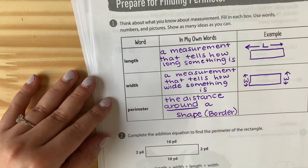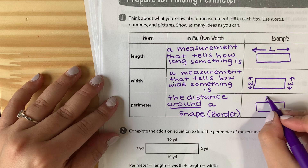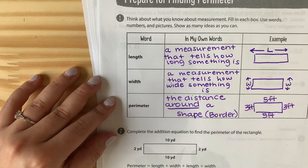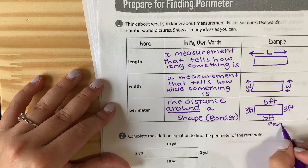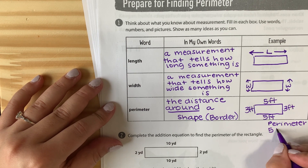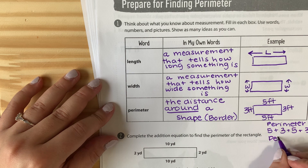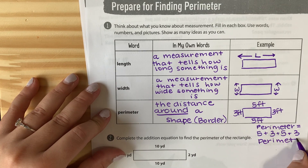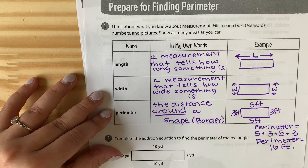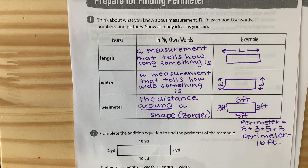An example of perimeter: we draw a rectangle that is 5 feet by 3 feet — 5 feet on top and bottom, 3 feet on each side. Perimeter equals 5 + 3 + 5 + 3, so the perimeter equals 16 feet. That is the end of our video today. If you have any questions, feel free to join the meet and ask. It is your job to now complete page 332, and show me either on Google Meet or on Seesaw. Good luck — I'm here if you need me.